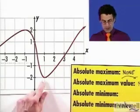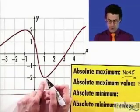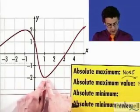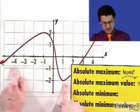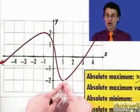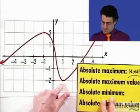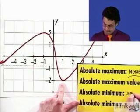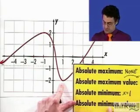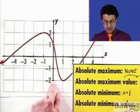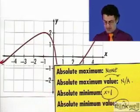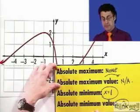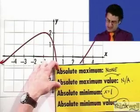What about the absolute minimum? Well, this is a local min at x equals 1. Is it a global min? It sure is, because this side is asymptotic to an asymptote way up here, so this is the rock bottom lowest point this function gets. There's an absolute min at x equals 1, and the absolute minimum value is negative 2. So sometimes we might have an absolute min but not an absolute max.